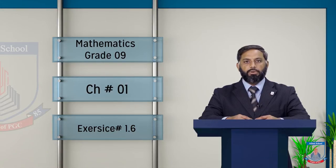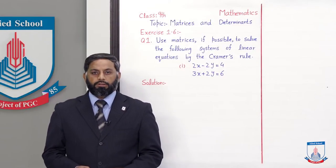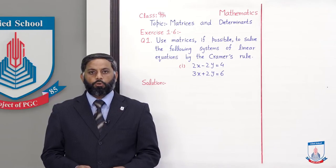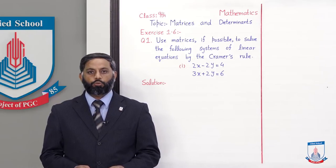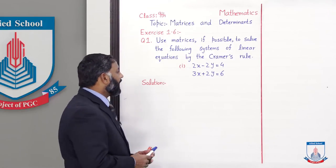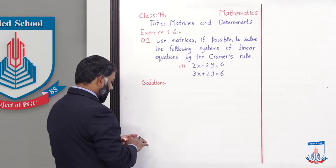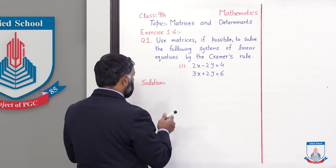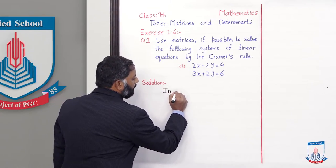Aaj ke lecture mein Cramer's Rules se equations ko solve karna seekhenge. Board ki taraf chalte hain. Last lecture mein humne question number one ko matrix inversion method se solve kiya tha. Aaj ke lecture mein hume isi question ko Cramer's Rules se solve karna hai. Ab ismein part one mein hume do linear equations do variables mein given hain.